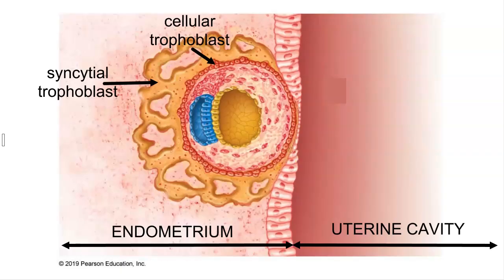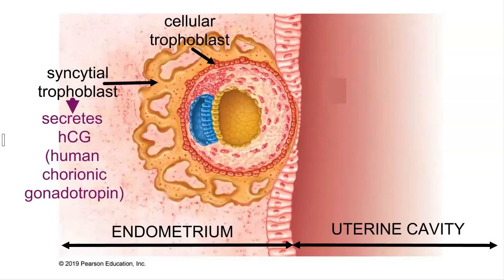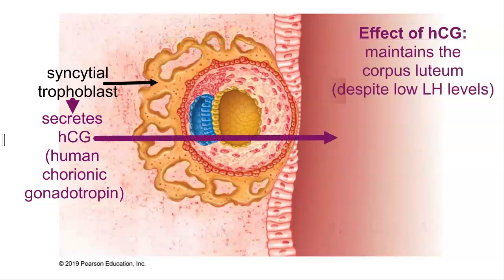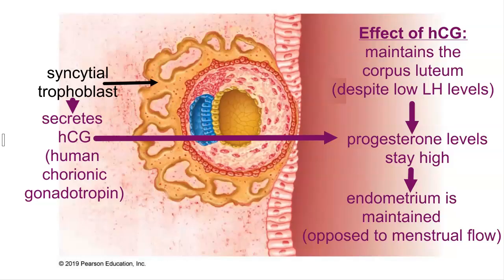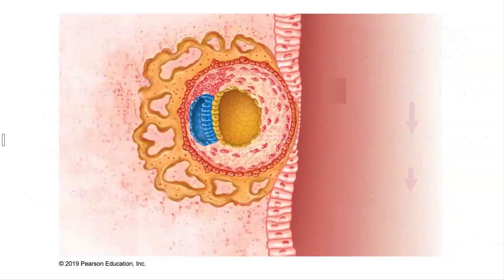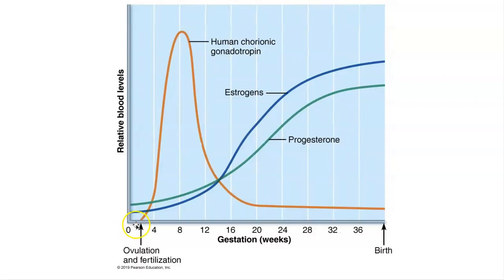In addition to aggressively invading the endometrium, the syncytial trophoblast is doing something else we can't see: it's producing a hormone called human chorionic gonadotropin, or HCG. HCG is the pregnancy hormone that will sustain the life of the corpus luteum so that progesterone levels remain high. As soon as the trophoblast forms in the blastocyst, even prior to implantation, HCG levels are increasing and they rapidly increase at the start of pregnancy.